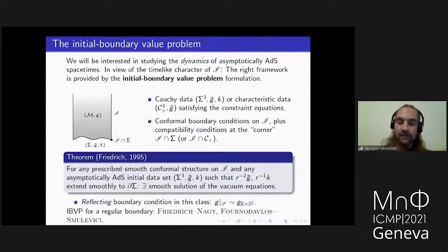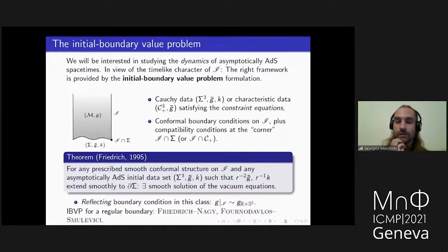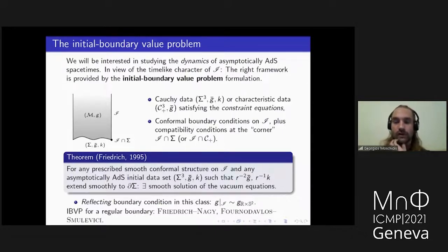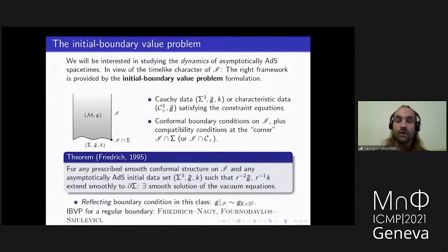How is the initial boundary value problem formulated? One prescribes initial data as Cauchy data or characteristic data along a suitable three-dimensional hypersurface satisfying the appropriate constraint equations, and one prescribes boundary data at infinity in terms of the conformal geometry of that hypersurface, ensuring compatibility conditions at the corner where the initial hypersurface meets the boundary at infinity. The natural question is what type of boundary conditions lead to a well-posed initial boundary value problem. The first person to work on this and provide a satisfying answer was Helmut Friedrich, who in 1995 proved that for each prescription of a smooth conformal structure at infinity and for each smooth asymptotically ADS initial data suitably regular near the boundary, there exists at least locally in time a smooth solution of the vacuum Einstein equations attaining those data, geometrically unique in an appropriate sense. Within this class there is an important element: a unique reflecting boundary condition corresponding to the prescription of the conformal structure at infinity being that of the infinity of ADS spacetime, namely the conformal structure of the round cylinder R cross S^2. For the regular initial boundary value problem — where boundary data are prescribed along a regular hypersurface — Friedrich-Henneaux were first to prove existence for a wide class of boundary conditions, and geometric uniqueness became known very recently by Furnodov-Schlue.